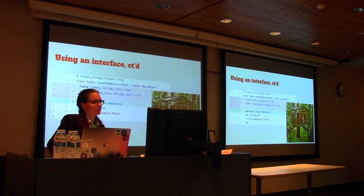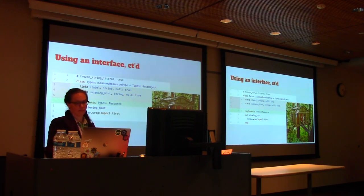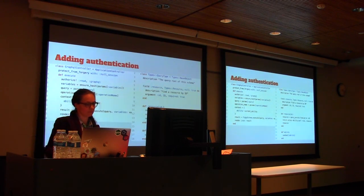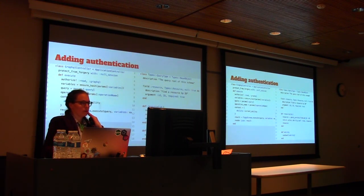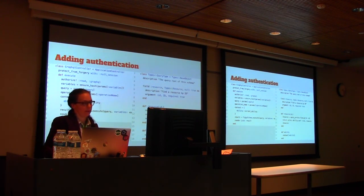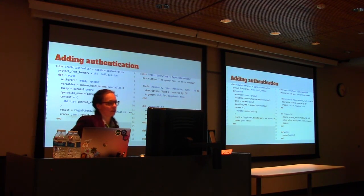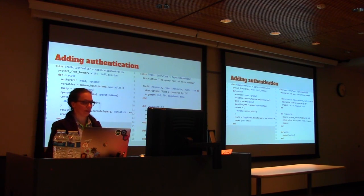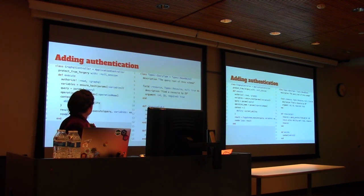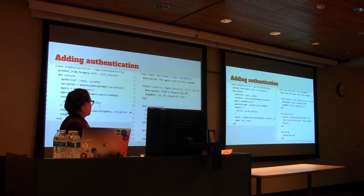The last part of using an interface was just to take out the field definitions in our scanned resource type and replace them with the statement that we're implementing that interface. After that, we wanted to add authentication to make sure that resources a user is trying to retrieve are resources they're allowed to view. We plug this logic into the controller and through the context pass what we need down to the query type — in the controller we have the authorize right there for reading GraphQL, and down in the context we pass the ability so in the query we can make sure that whoever's accessing this endpoint has permission to read the specific resource.